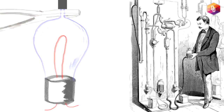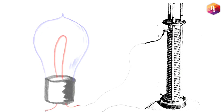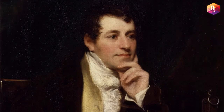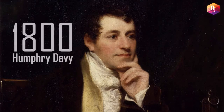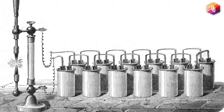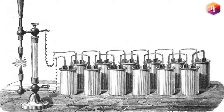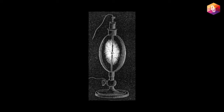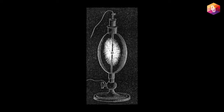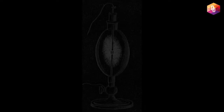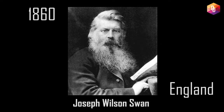The first electric light was made in 1800 by Humphry Davy, an English scientist. He experimented with electricity and invented an electric battery. When he connected wires to his battery and a piece of carbon, the carbon glowed and produced light. This is called an electric arc.